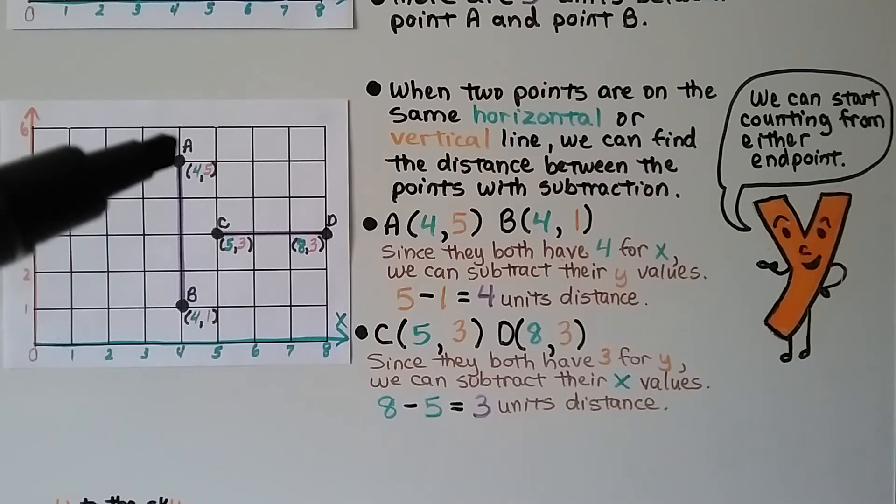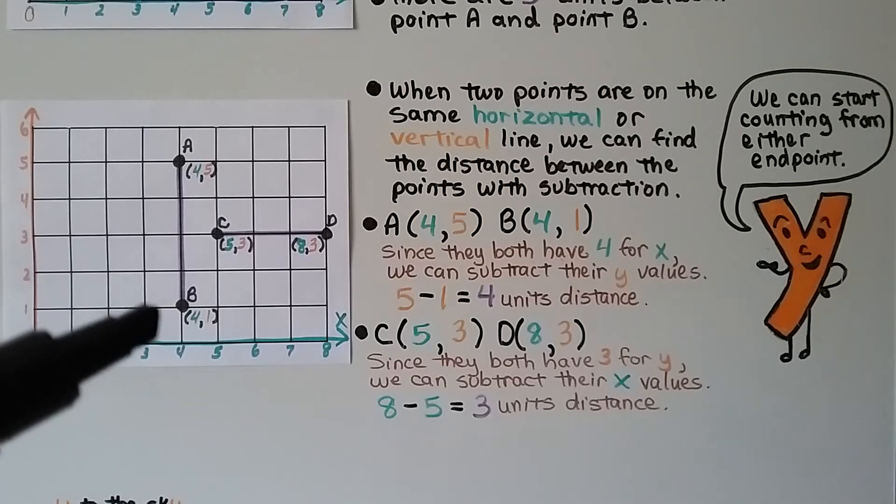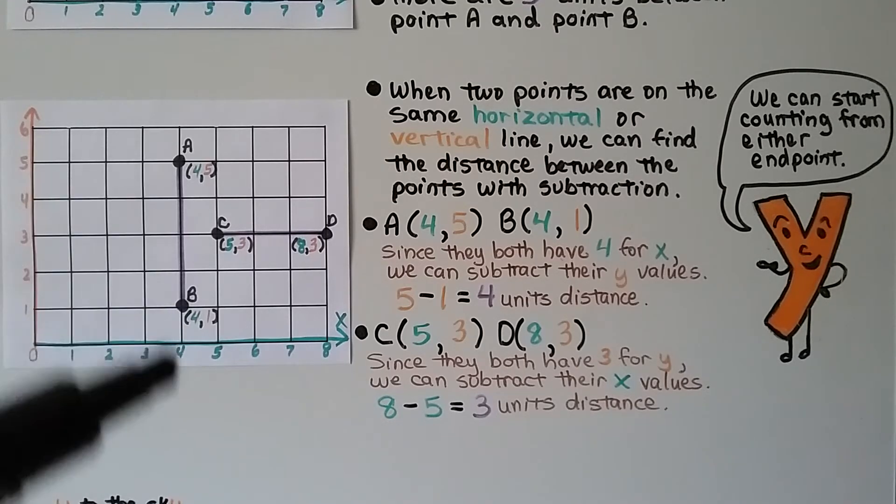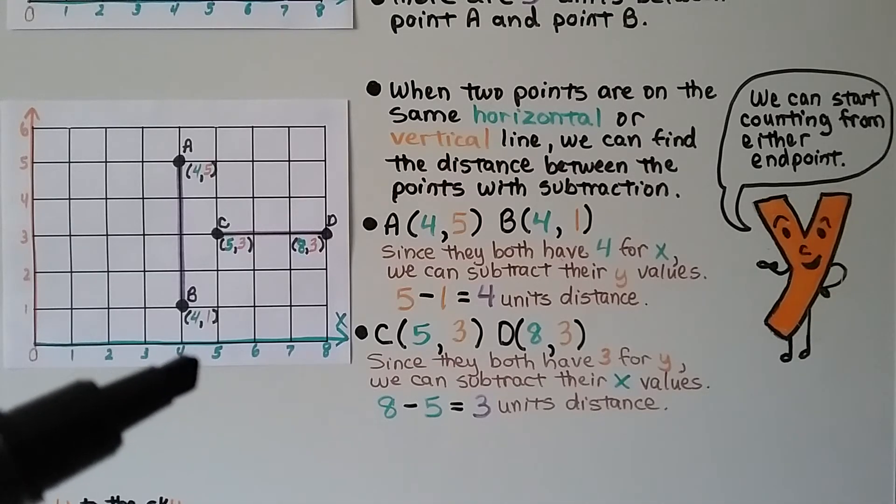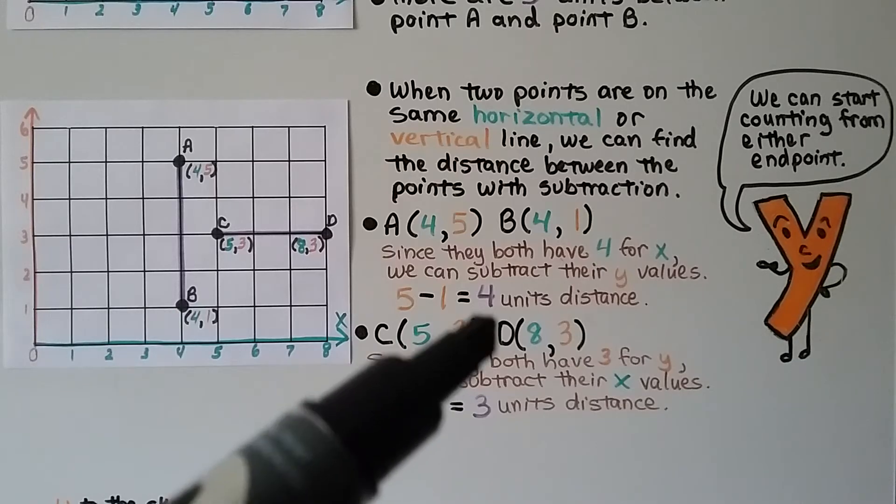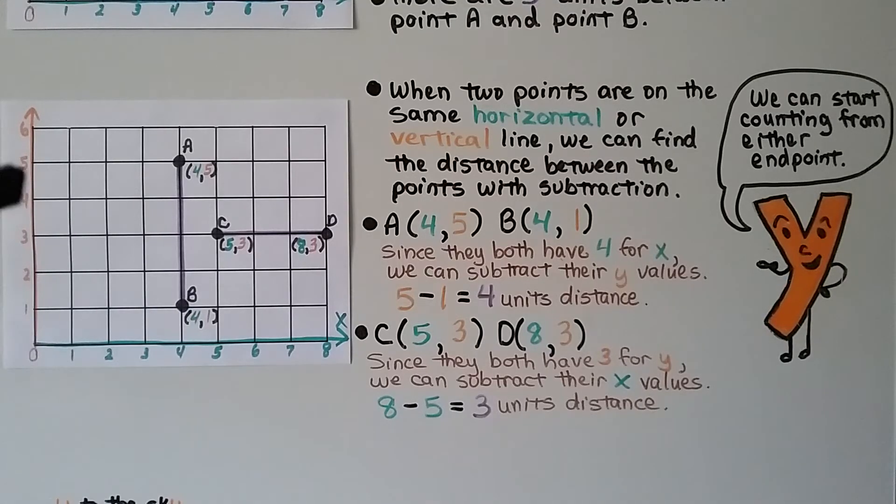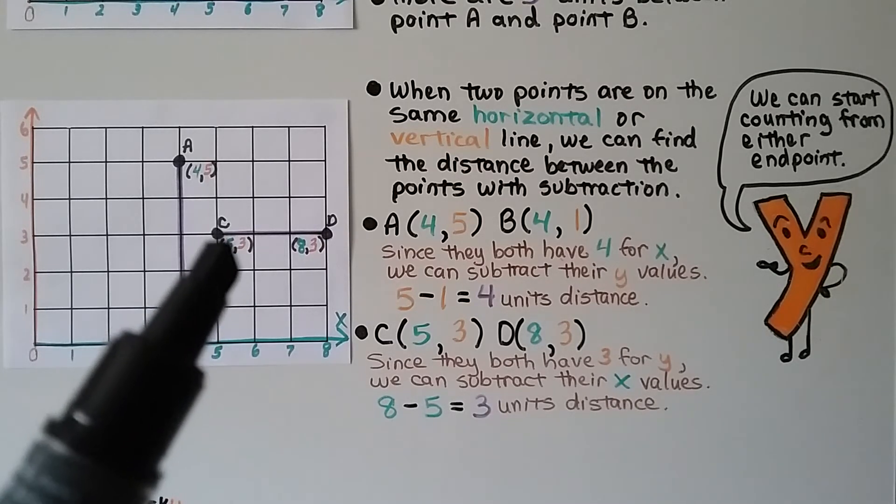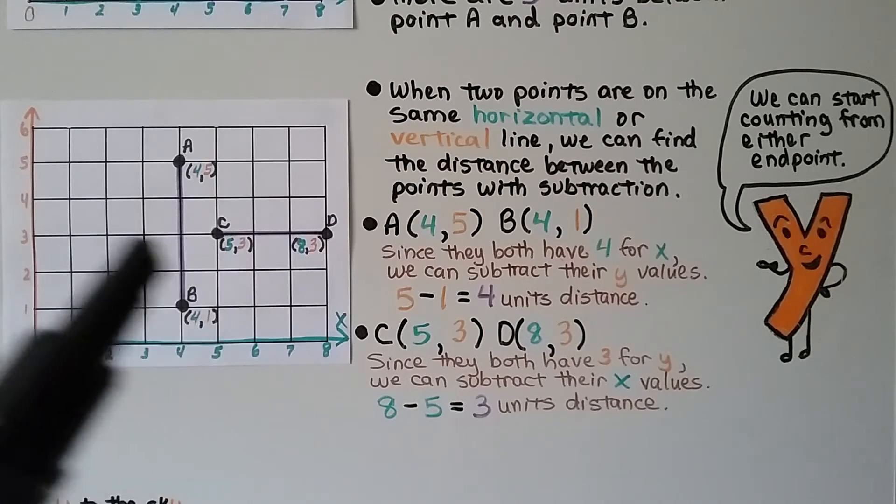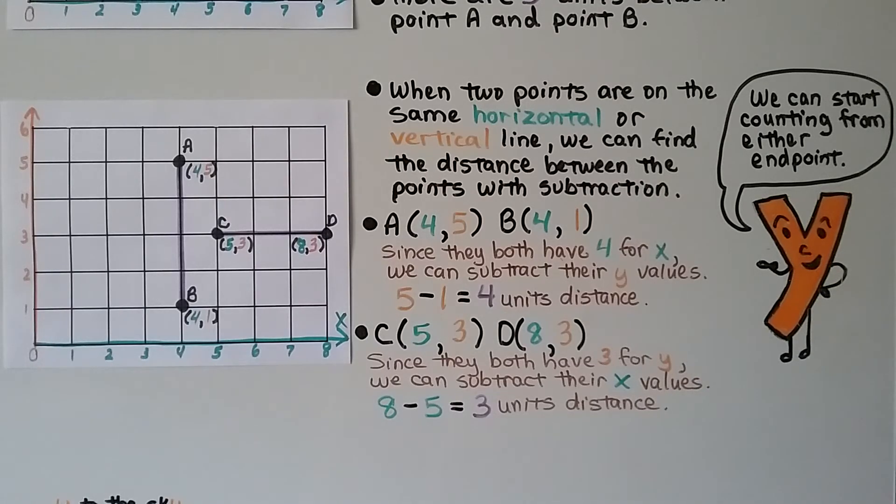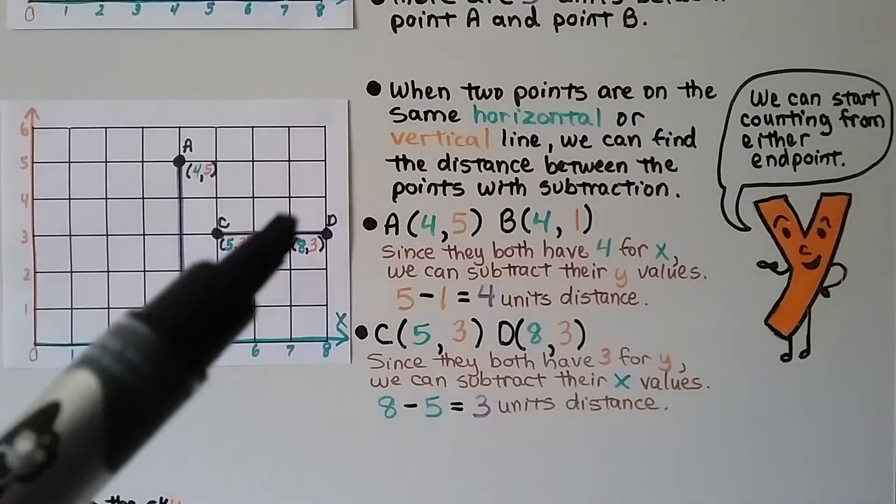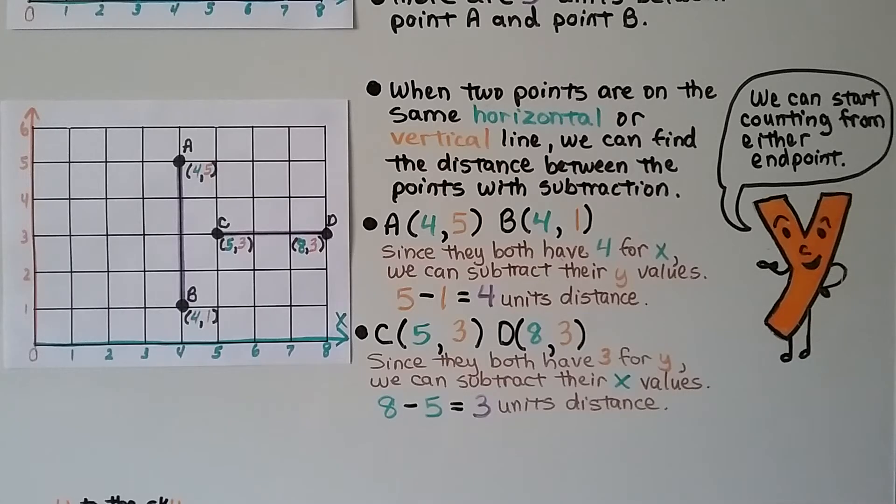Point A is at 4 for x and 5 for y, and point B is at 4 for x and 1 for y. Since they both have 4 for x, we can subtract their y values. 5 minus 1 equals 4 units distance. For the horizontal, we've got points C and D. They both have 3 for y. Since they both have 3 for y, we can subtract their x values. 8 minus 5 is 3 units distance. We can start counting from either endpoint.